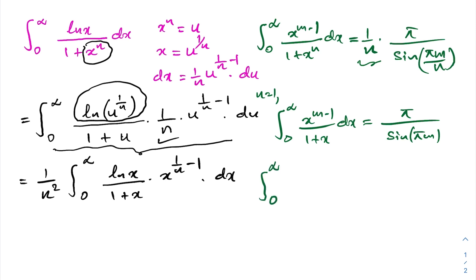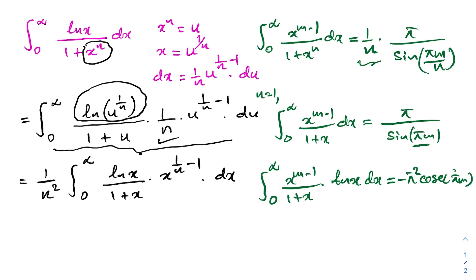Differentiating the left side brings down a factor of natural log of x, giving the integral from 0 to infinity of x to the m minus 1 times natural log of x over 1 plus x, dx. On the right side, the derivative of pi times cosecant of pi m is minus pi squared times cosecant of pi m times cotangent of pi m.